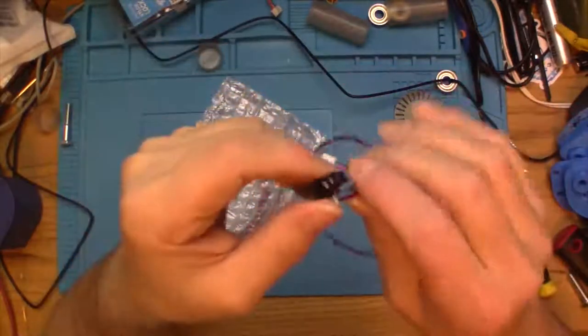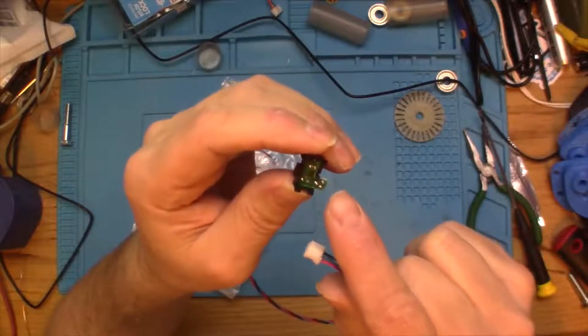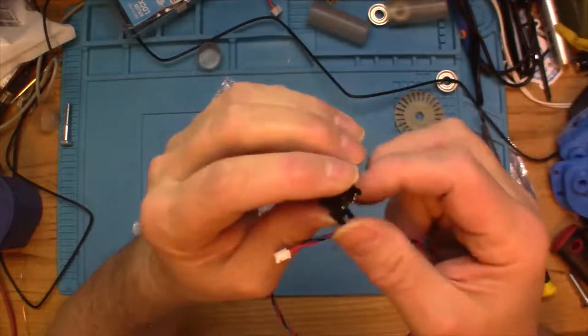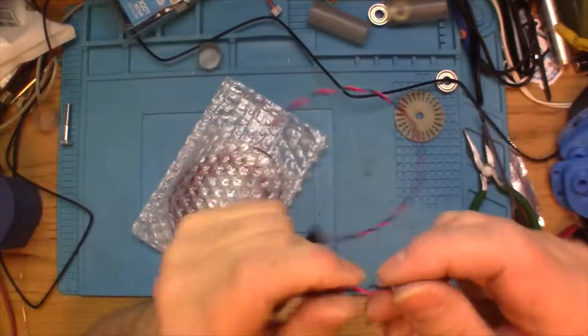The nice thing about these, as opposed to some of the others, is all the biasing resistors are on the little board. It comes with this nice little cable that we can plug into with just three wires.